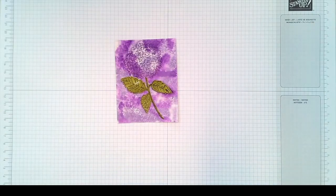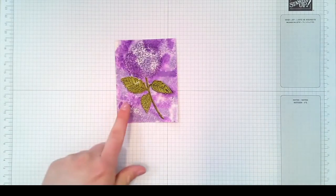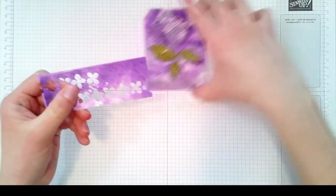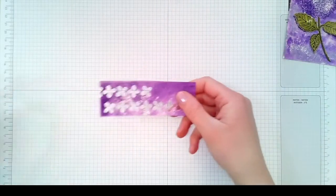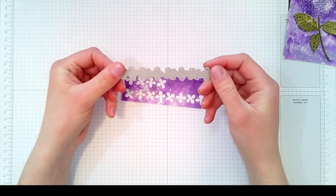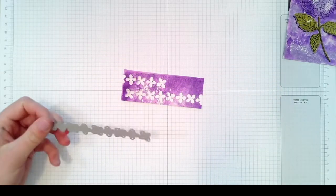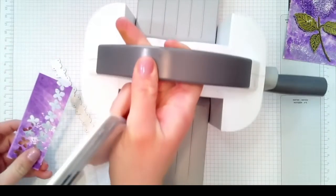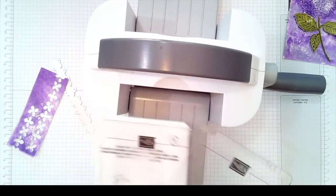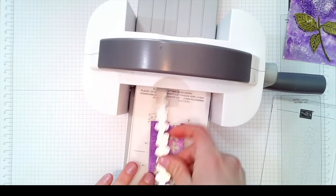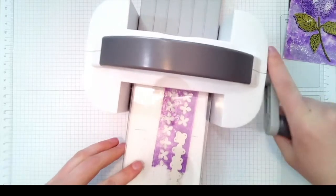Next what I did is I used the same smooch technique that I did for the background here, except I did it on some scrap paper. I used this long border die with all these little hydrangea flowers and I used the little mini die cutting machine. That's super fun and super awesome.